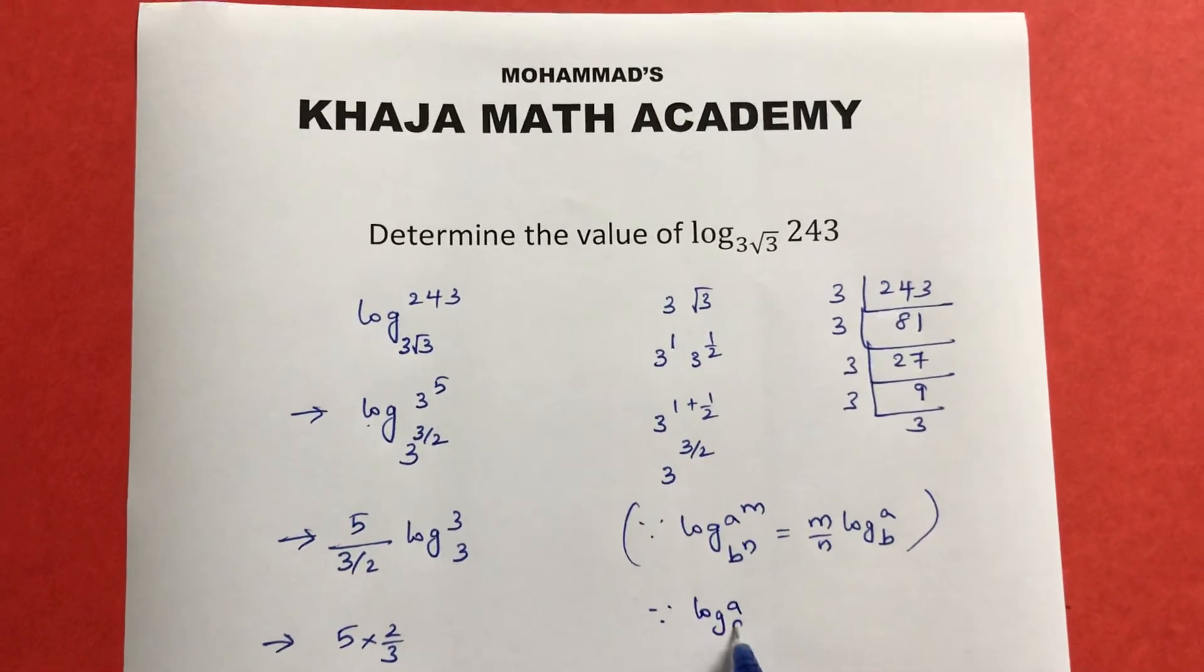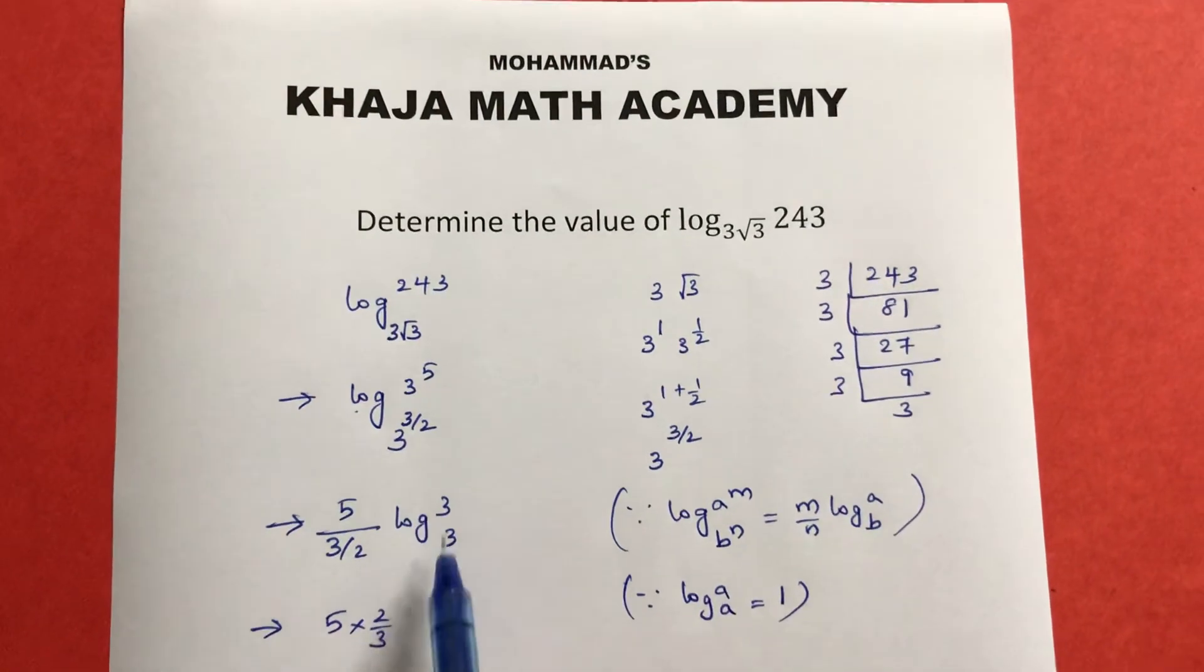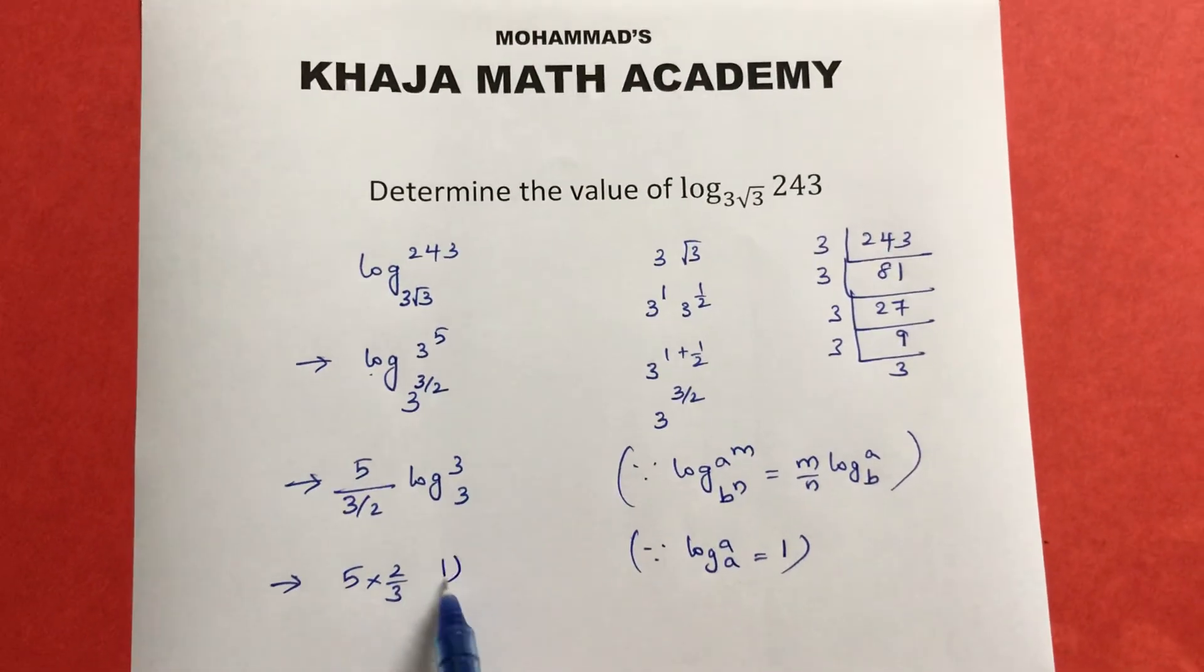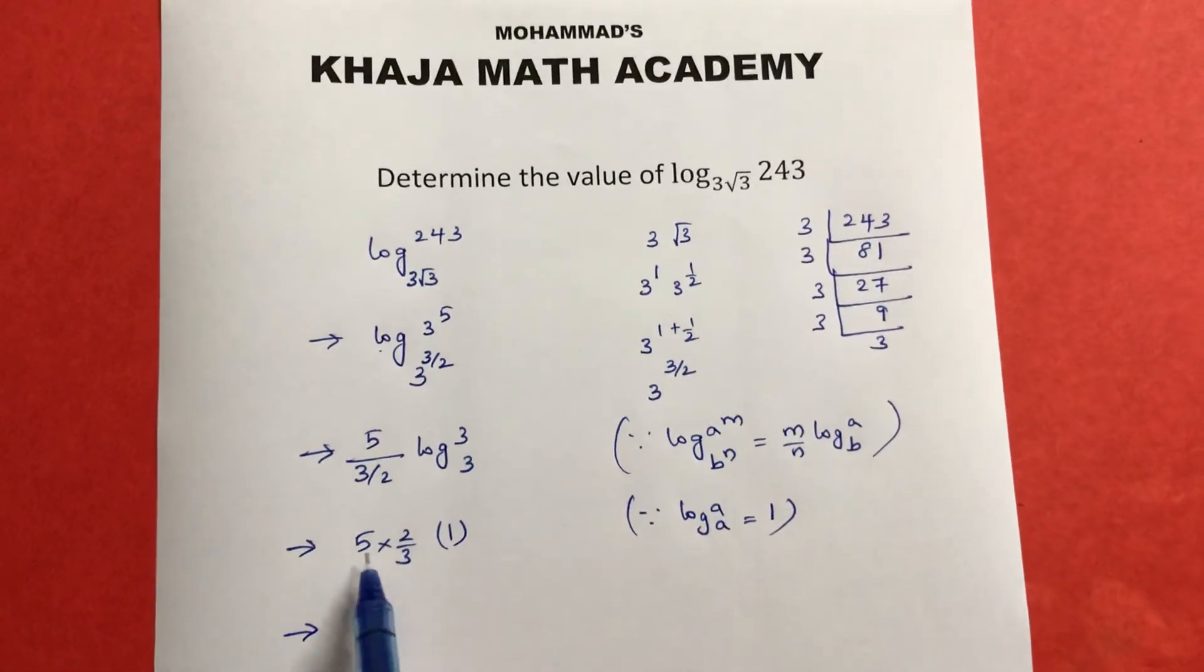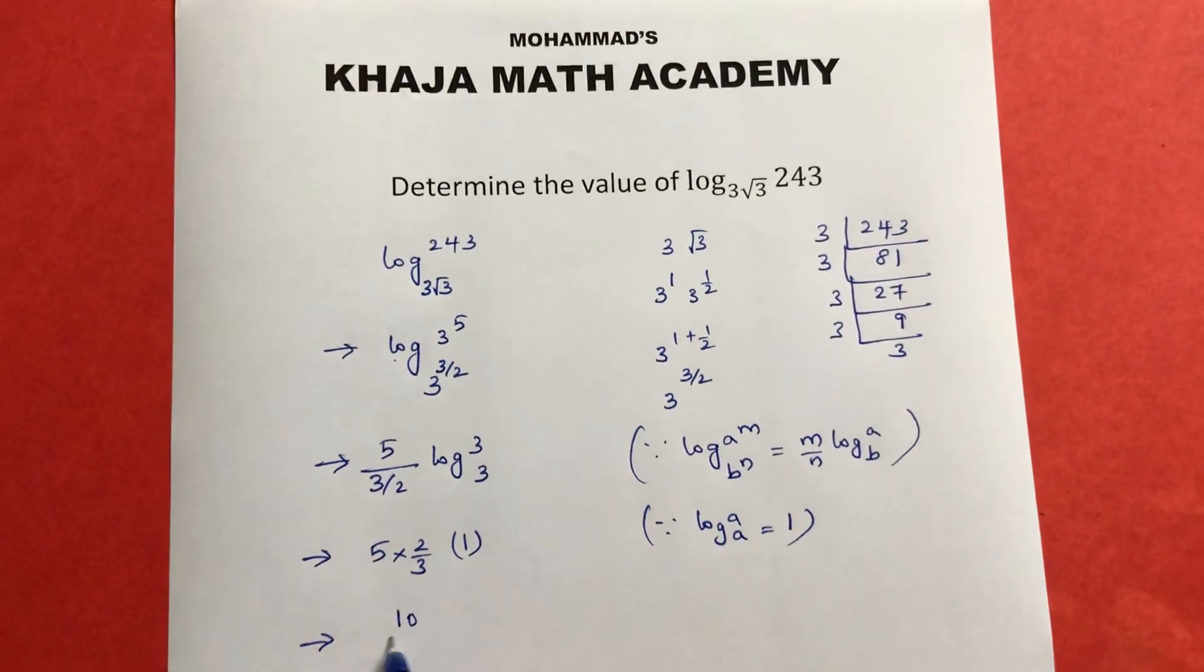The logarithm of a number to the same base has value 1, so log₃(3) is 1. Therefore, 5 times 2 is 10 by 3.